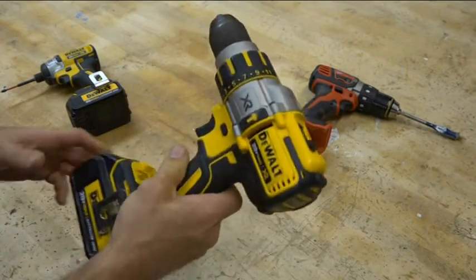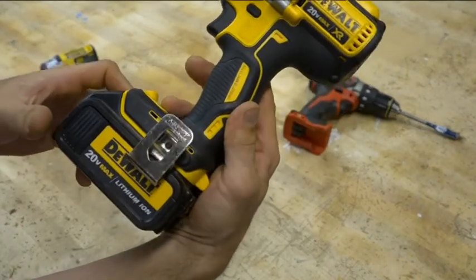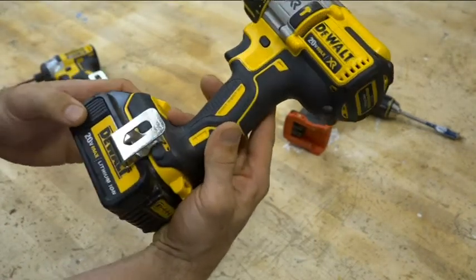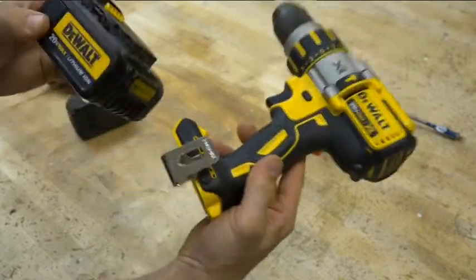Battery drills come in an array of different voltages depending on the size and the need. The more professional versions are usually an 18 or a 20 volt.